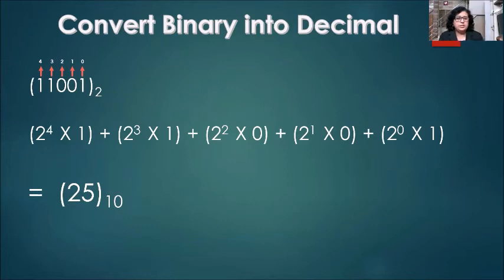Now, please see the calculation carefully. Since the first digit 1 is at position number 4, therefore we will write it as 2 to the power 4 times 1. If we talk about the second digit, which is again 1 at position number 3, therefore we will write 2 to the power 3 times 1. Similarly, 2 to the power 2 times 0, 2 to the power 1 times 0.